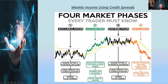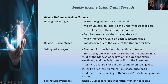It's important to understand the four market phases: accumulation, advancing, distribution, and declining. If we're in an advancing market, you want to be buying calls. If we're in a declining market, you want to be buying puts. But there are ways to make money with options even in sideways movement areas.